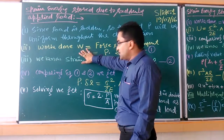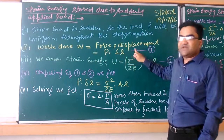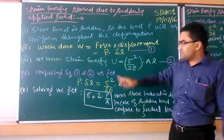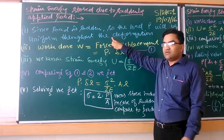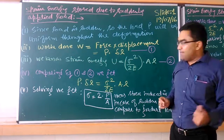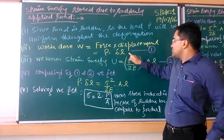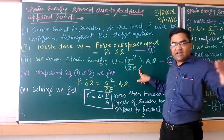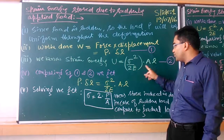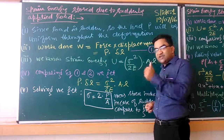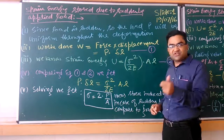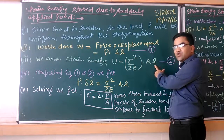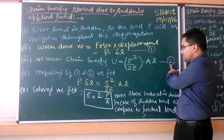The work done due to the sudden load will be equal to force multiplied by displacement or deformation. So work done equals P into delta — this is equation number 1. The strain energy equation already derived in our previous lecture is sigma squared upon 2E into A into L, where sigma is the stress induced, E is Young's modulus, A is the cross-sectional area, and L is the original length. This is equation number 2.